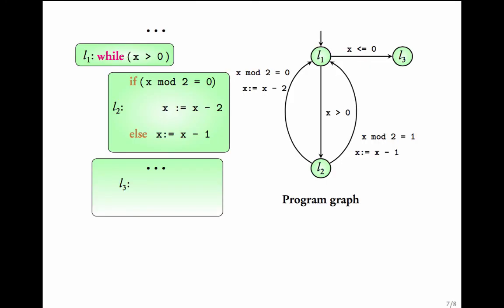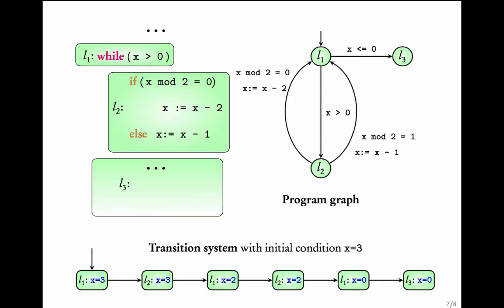This is the program graph representing this simple while loop. To see the specific behavior of the program starting from a certain value of the variable, we can look at the transition system corresponding to the program graph and that starting value. For example, let us take the initial value of x to be equal to 3.